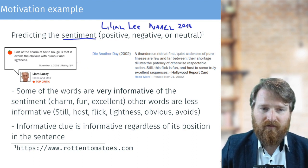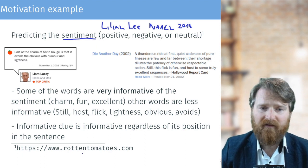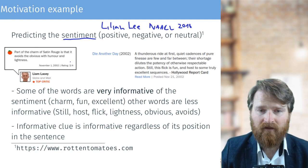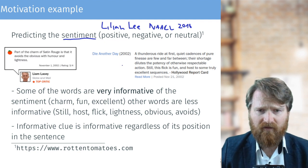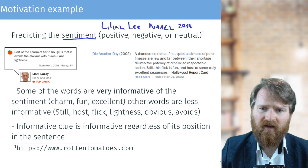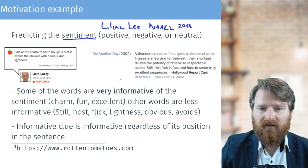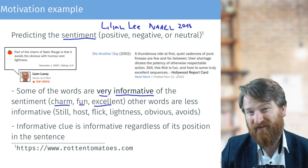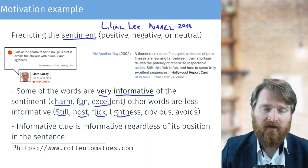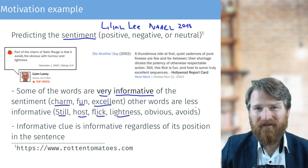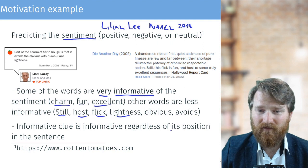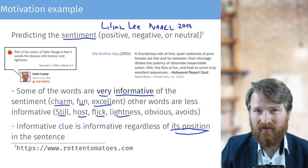Here are two examples of movie reviews from Rotten Tomatoes. One quote is: 'Part of the charm of Satin Rouge is that it avoids the obvious with humor and lightness.' Another from what appears to be a James Bond movie: 'Still, this flick is fun and holds to some truly excellent sequences.' You might notice that some words are very informative for sentiment — such as charm, fun, excellent — while others like still, flick, linus are not. The key idea is that these informative words or n-grams signal sentiment regardless of where they appear in the sentence. This will be one of the key modeling assumptions for using convolutional neural nets.